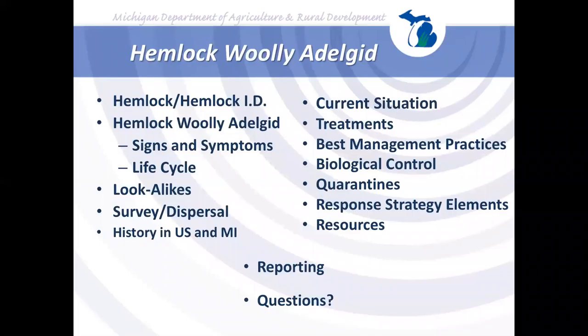Today's topics include background on Hemlock in Michigan, Hemlock identification, what Hemlock Woolly Adelgid is, signs and symptoms, life cycle, lookalikes, survey methods, dispersal, history of HWA in the U.S. and Michigan, current Michigan situation, available treatments, best management practices, biocontrol, quarantines, primary response strategy elements, resources, how to report findings, and time for questions.